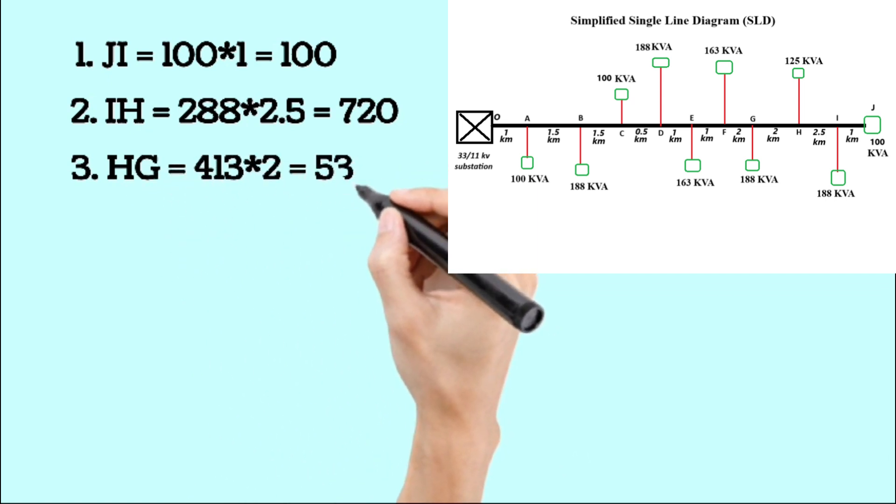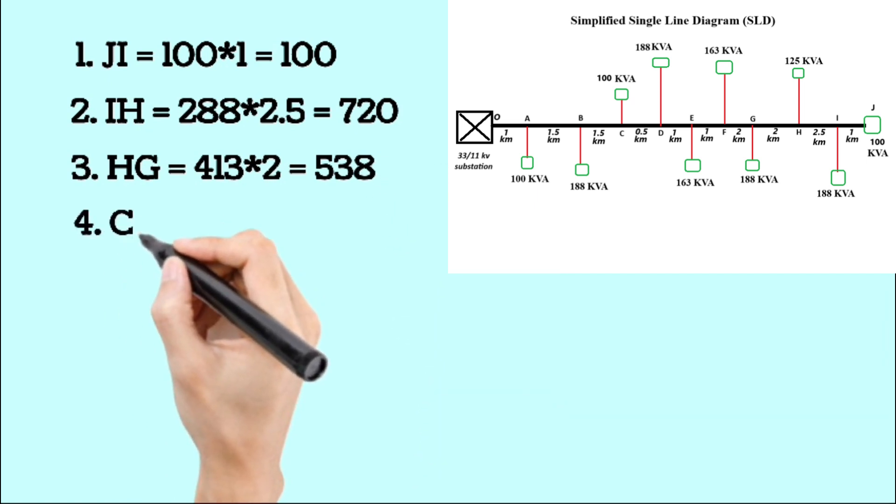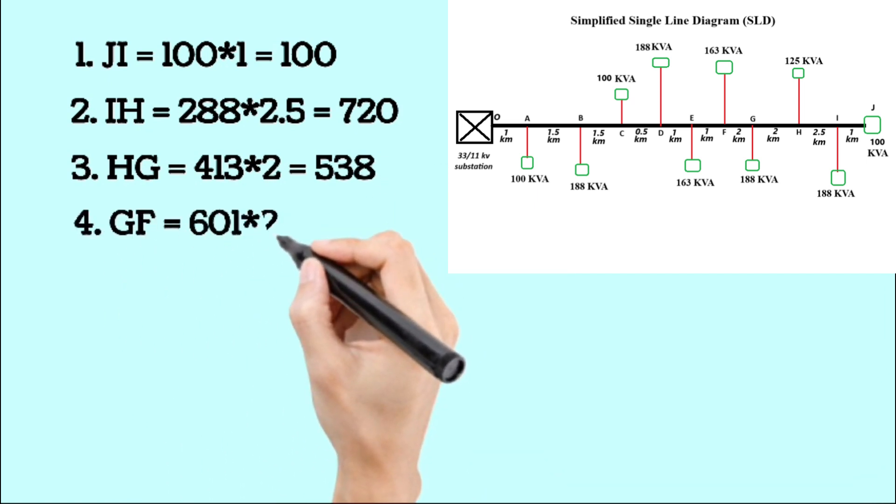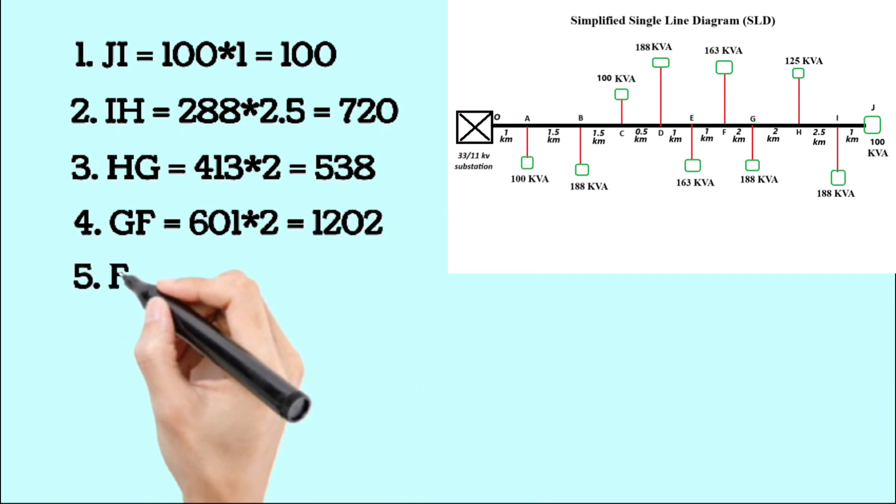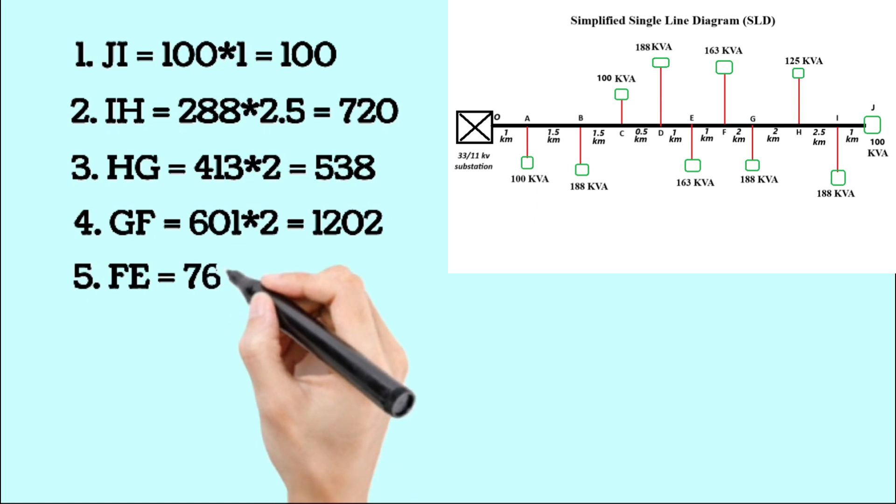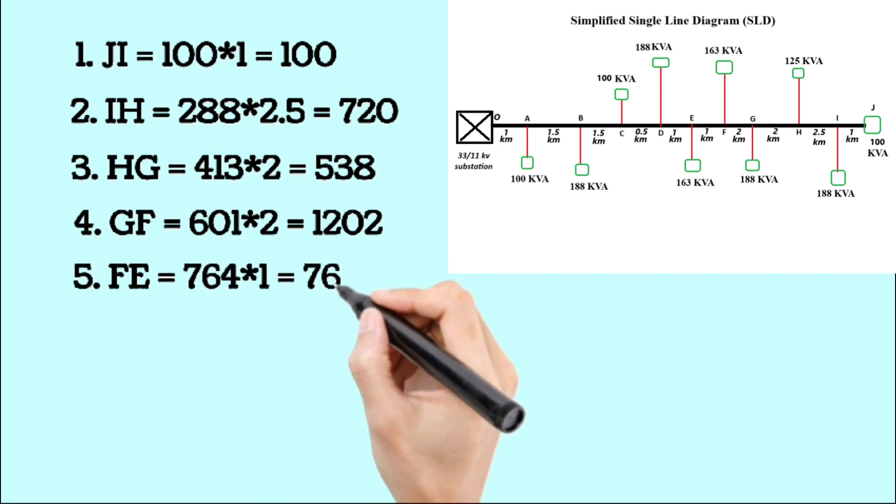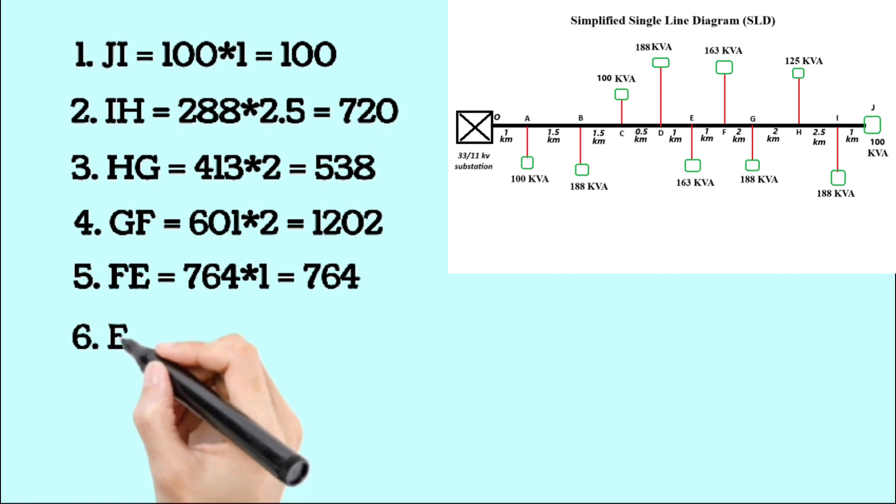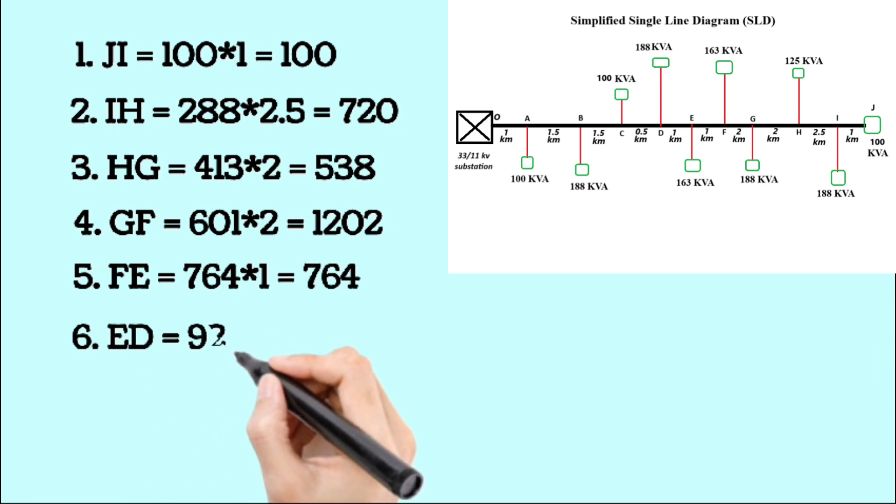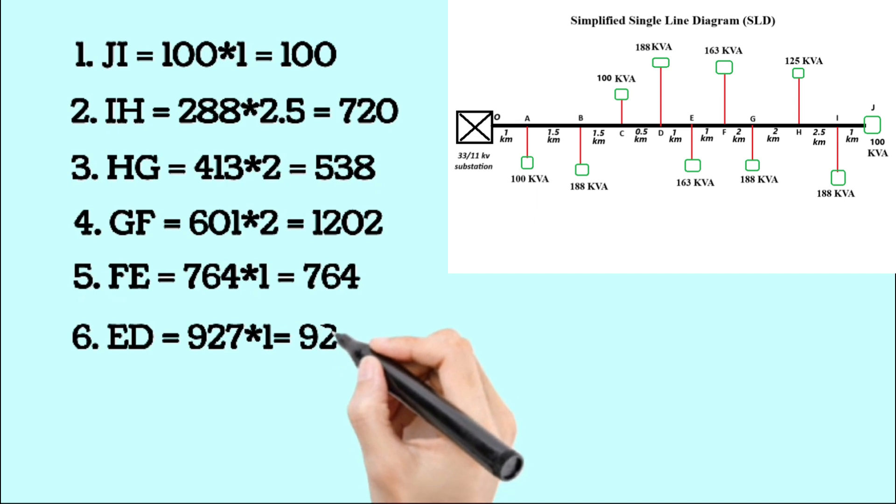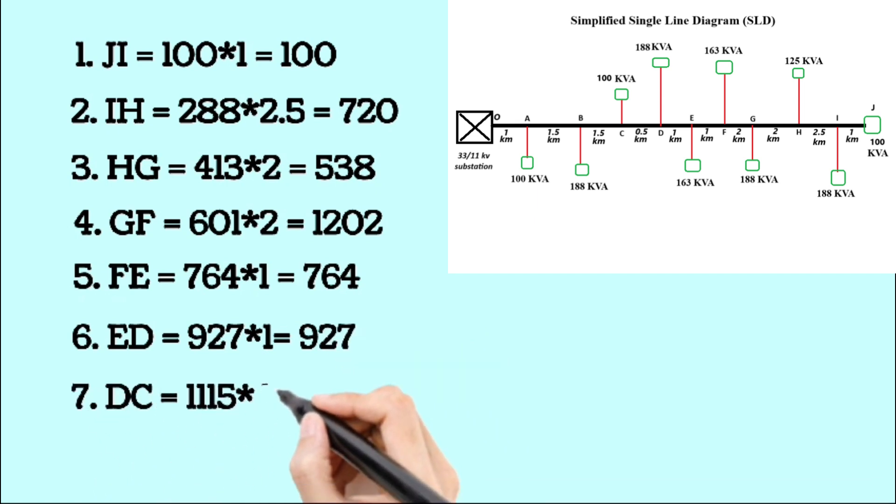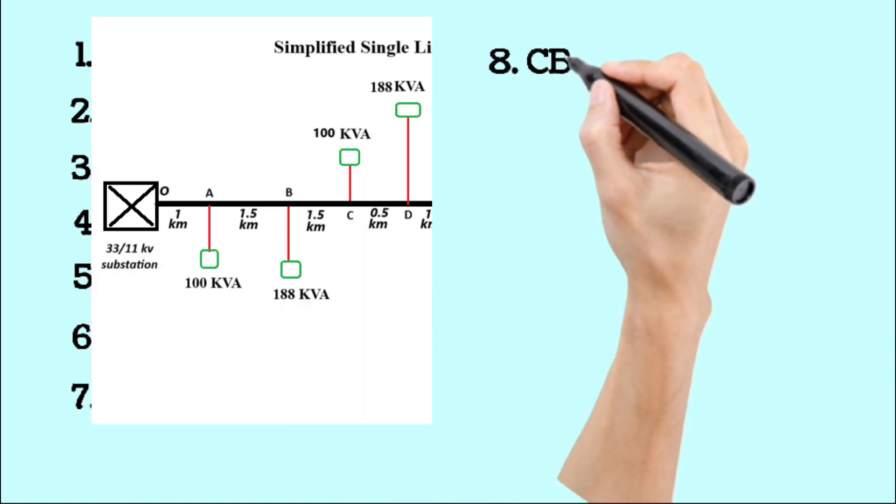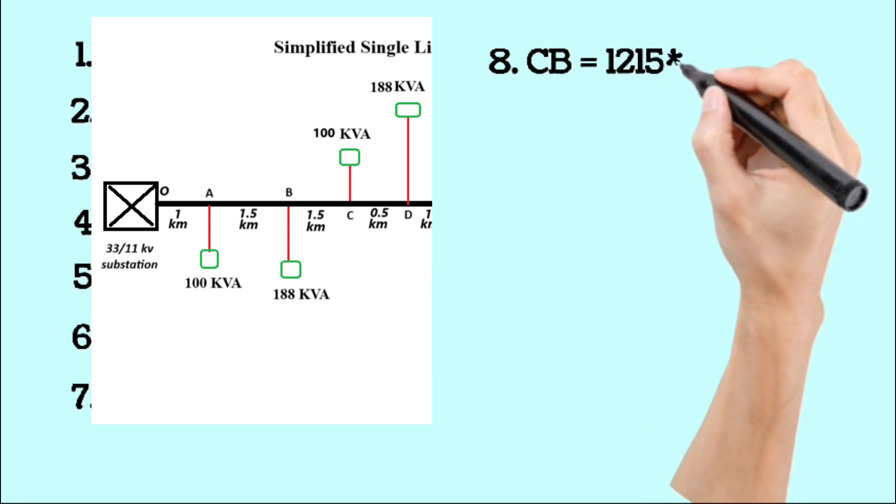For segment FE: 764 multiplied by 1 equals 764. For segment ED: 927 multiplied by 1 equals 927. For segment DC: 1115 multiplied by 0.5 equals 557.5. For segment CB: 1215 multiplied by 1.5 equals 1822.5.